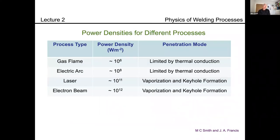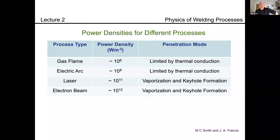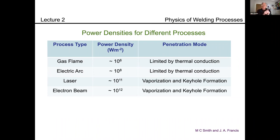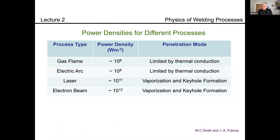Here are some typical power densities for different processes. A gas flame is maybe 10⁶ watts per square metre. An electric arc is maybe 10⁸ watts per square metre. Lasers and electron beam welds are much higher. This means the way heat gets into the workpiece to form the weld differs. If the power density is lower, you only melt — you don't vaporize — so heat flow is limited by thermal conduction away from the weld pool and by convection within it. Whereas a laser or electron beam weld punches a hole right through, vaporizes the material, and forms a keyhole, so energy reaches the bottom without relying on conduction or convection through the metallic substrate.